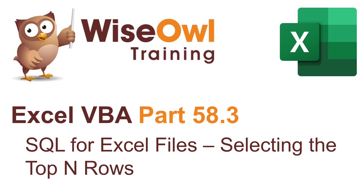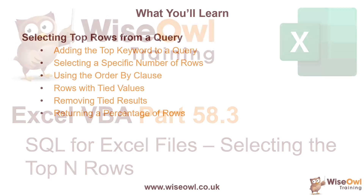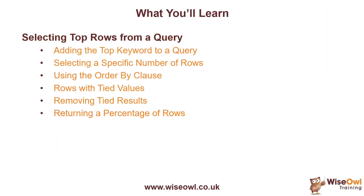Welcome to this Wysel Excel VBA tutorial. In the third part of this series on writing SQL for Excel files, we're going to look at how you can select the top end rows from a table. We'll start with a quick look at where you add the top keyword to an existing query and use that to select a specific number of rows. We'll then look at how you can use the ORDER BY clause to influence which rows appear at the top of the result set.